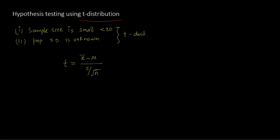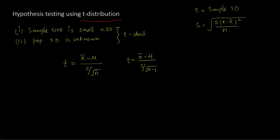You will see two formulas. One is x-bar minus mu divided by s over square root n, and the second is x-bar minus mu divided by s over square root of (n minus 1). The difference comes from how s, the sample standard deviation, is calculated. Gossett said that using the concept of degrees of freedom, standard deviation should be calculated with n minus 1 in the denominator, where n minus 1 is the degrees of freedom.